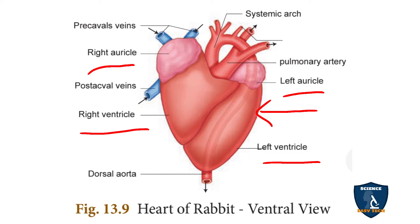The two ventricles are connected by the septa. The right auricle and right ventricle are shown here — this is the right auricle and this is the right ventricle. Here you have the valves.